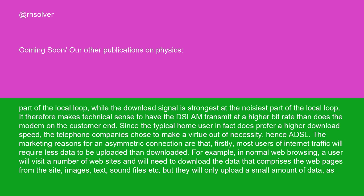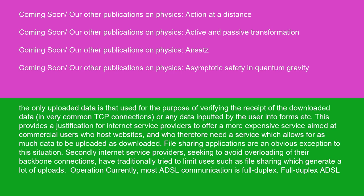The marketing reasons for an asymmetric connection are that, firstly, most users of internet traffic will require less data to be uploaded than downloaded. For example, in normal web browsing, a user will visit a number of websites and will need to download the data comprising the web pages — images, text, sound files, etc. — but they will only upload a small amount of data. The only uploaded data is that used for verifying the receipt of the downloaded data in TCP connections, or any data inputted by the user in forms, etc. This provides a justification for ISPs to offer a more expensive service aimed at commercial users who host websites and need as much upload capacity as download. File sharing applications are an obvious exception to this situation.